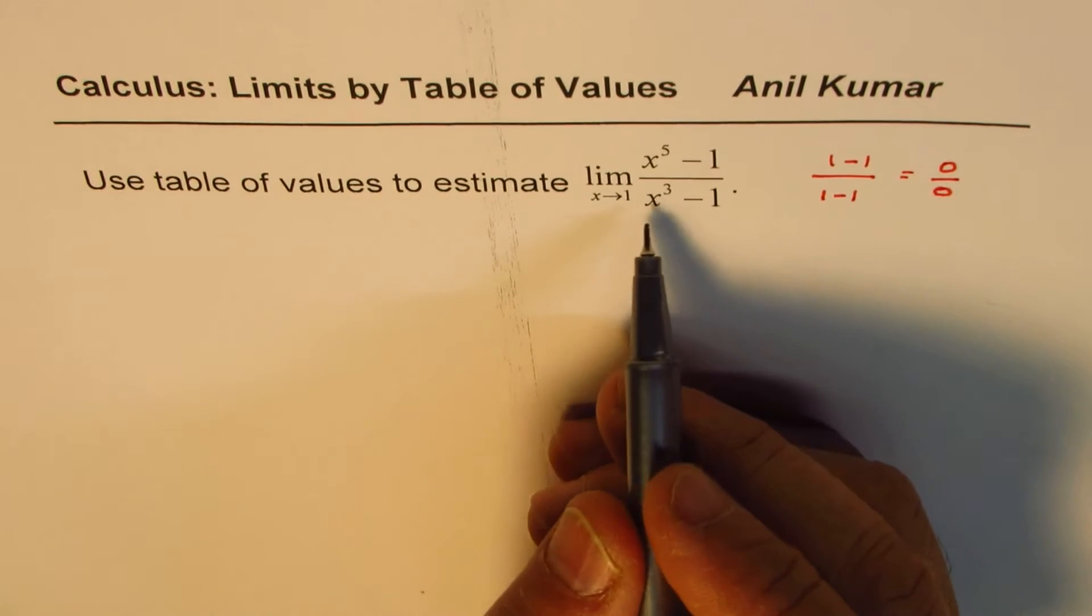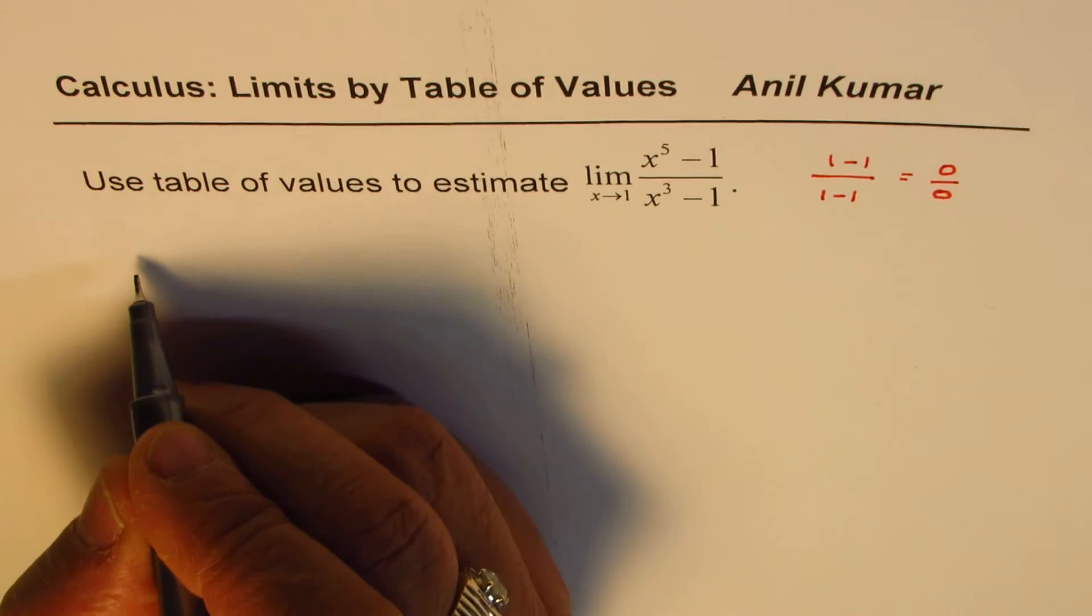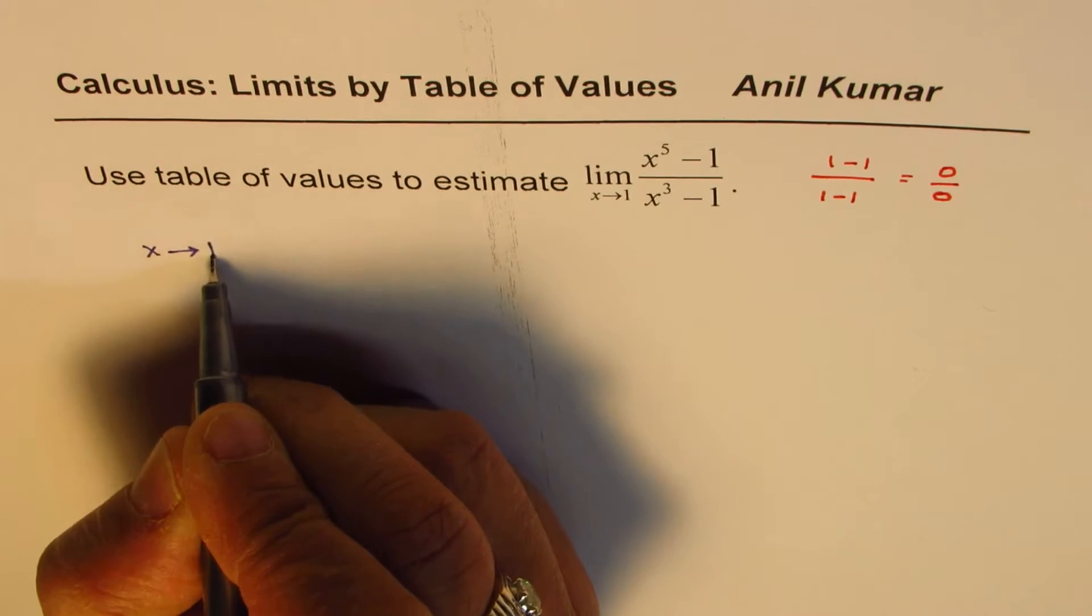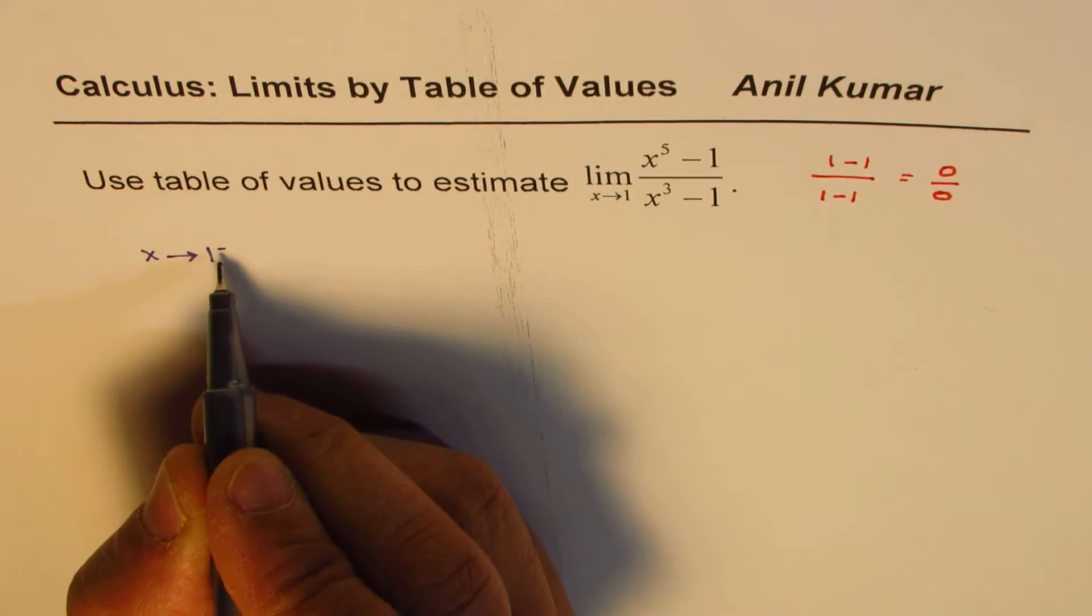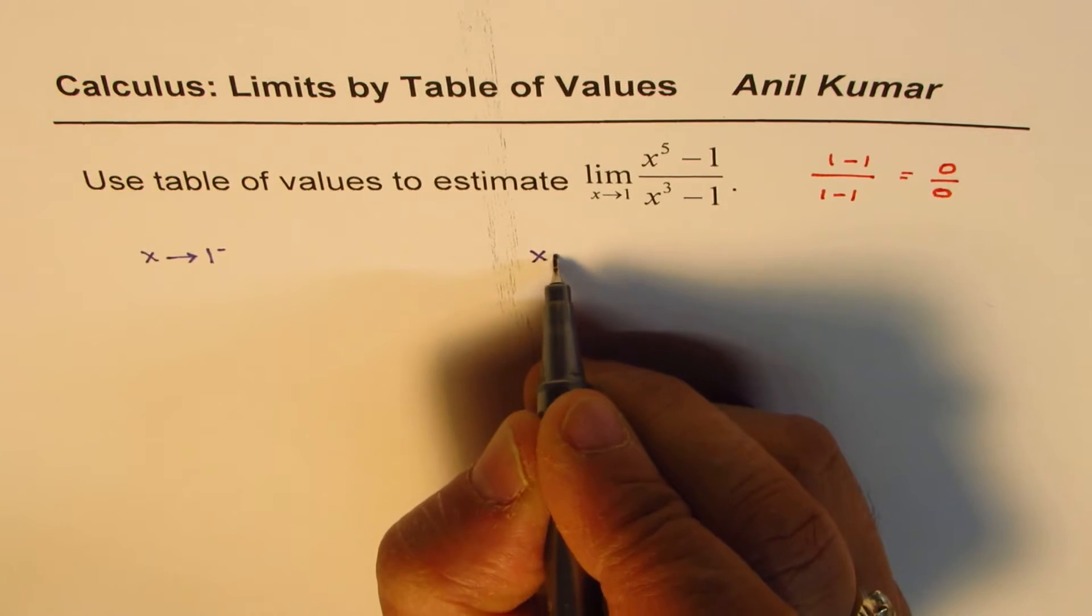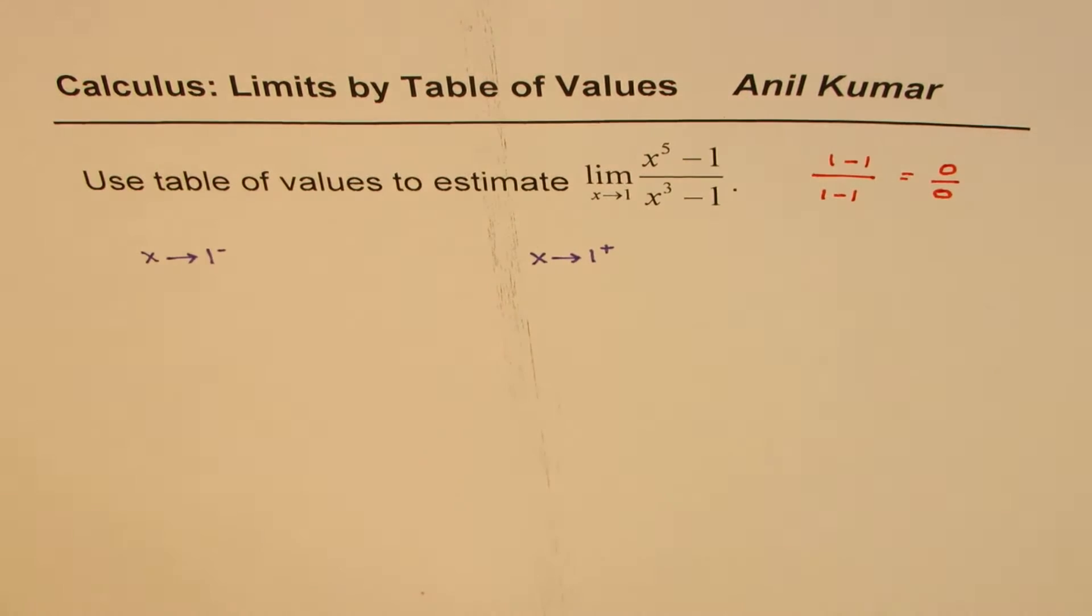Now, we will find the limit using table of values. Approaching 1 could be that you could approach 1 from the left side. We normally call this as x approaches 1 minus. Or you could find this limit as x approaches 1 from the right side. That means slightly more than 1. So these are two different sides you can approach 1.